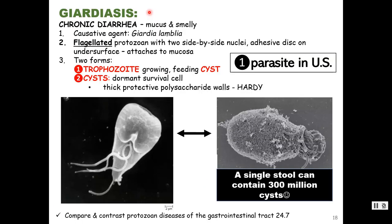The first disease is giardiasis, a form of chronic diarrhea. This diarrhea may have mucus and usually has a very strong odor. The causative agent is Giardia lamblia — they're pear-shaped, and looking at the ventral surface they have a sucker used to attach to the intestinal wall, plus four pairs of flagella. If you flip them over, they have two nuclei that look like little eyes. There are two forms: the trophozoite, which is the active feeding form, and the cyst stage.